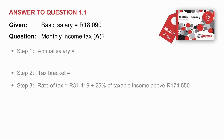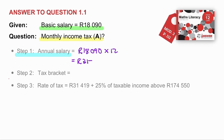So, question 1.1. We are given a payslip, and from it we can read that Solly earned a basic salary of R18,090. They have asked us to calculate the monthly income tax, which is A. For this, we need to work through all the steps that we learned in the previous video. Step 1: let's calculate the annual salary. We're going to take his monthly salary of R18,090, times it by 12 months, and we get an annual salary of R217,080.